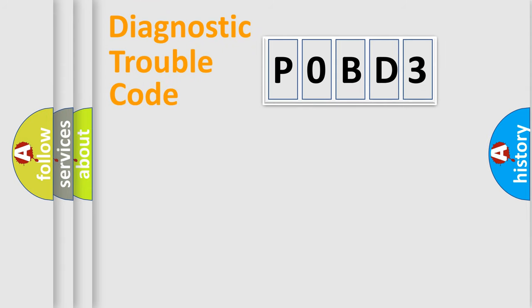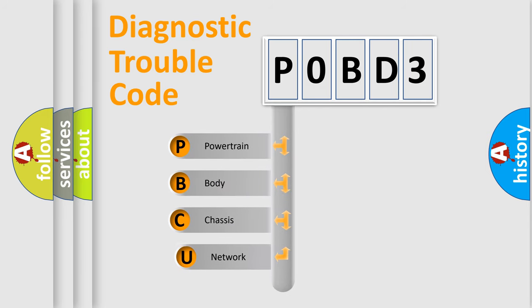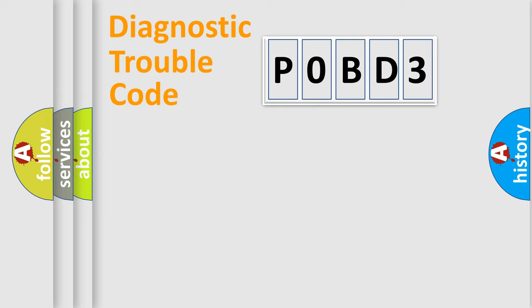First, let's look at the history of diagnostic fault code composition according to the OBD2 protocol, which is unified for all automakers since 2000. We divide the electric system of an automobile into four basic units: powertrain, body, chassis, and network.